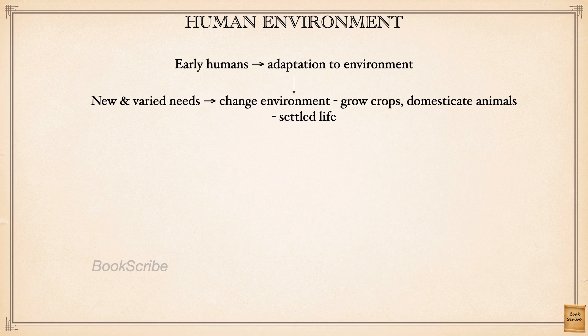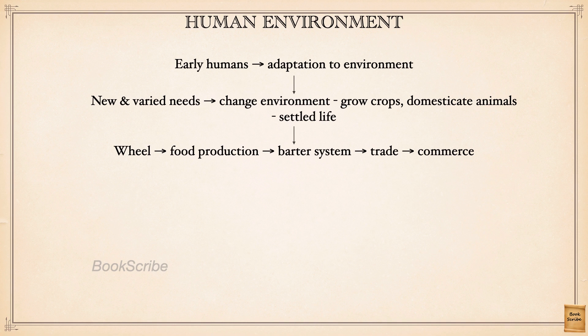Humans got food from crops and animals. Then came the invention of the wheel, making transportation easier and giving way to production of new products — one of the early products manufactured was the pot. Farming and domestication of animals led to increased food production, which gave rise to the barter system — the exchange of goods without money. For example, two bags of rice could be exchanged for a goat. As the barter system grew, trade and commerce developed.